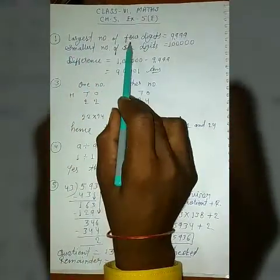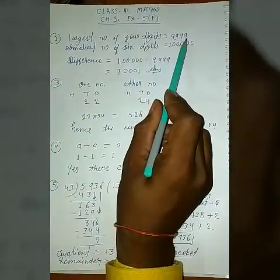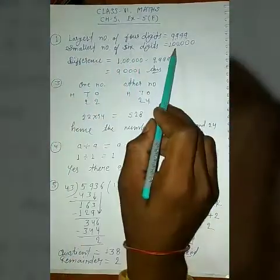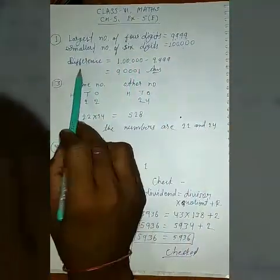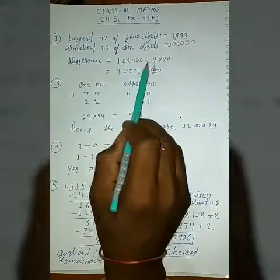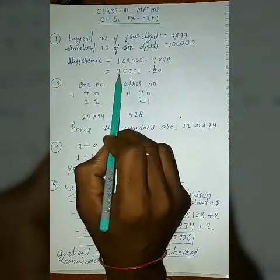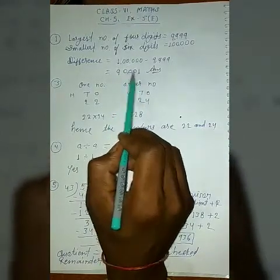The largest number of 4 digits is 9,999. The smallest number of 6 digits is 1,00,000. So the difference, this is the greater number, this is smaller: 1,00,000 minus 9,999. Subtract and you will get 90,001.